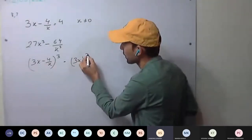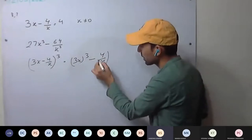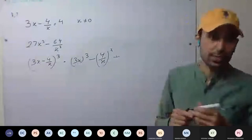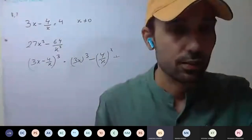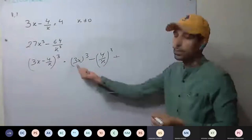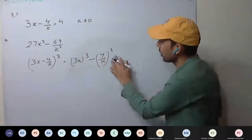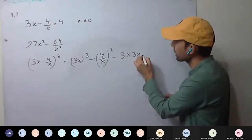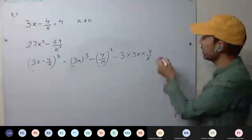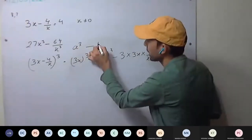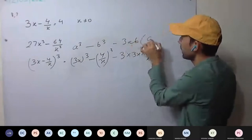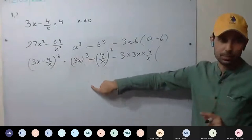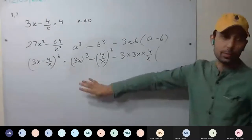Expand this one: 3x the whole cube minus 4 upon x the whole cube. A cube minus B cube. So 3x all cube minus 4 upon x all cube, minus 3 AB into A minus B. Always write the formula: A cube minus B cube minus 3AB(A minus B). Don't miss the steps — one more common mistake comes from missing steps. You are sure going to make mistakes if you skip steps.